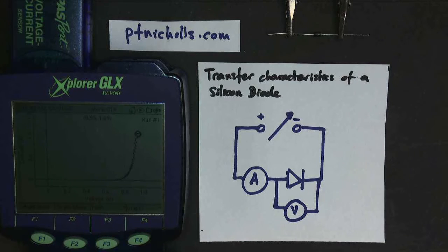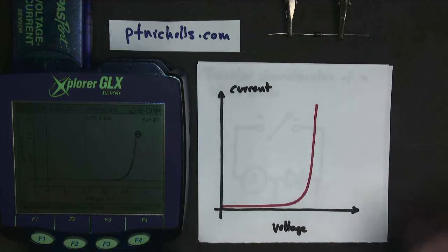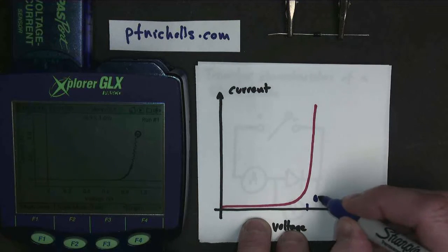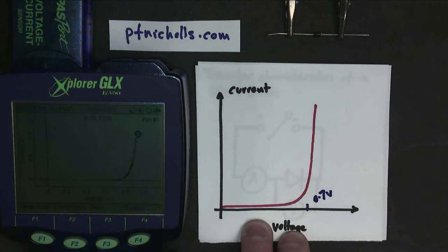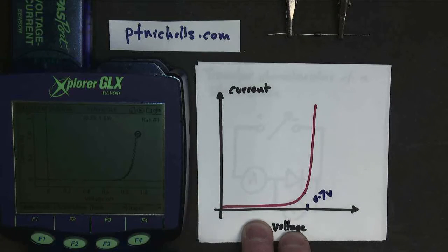But hold on, I hear you say, when I sketch this graph, I'm always told that this voltage here is 0.7 volts. And as you can clearly see on my display, it's 0.9 volts. So what's wrong?